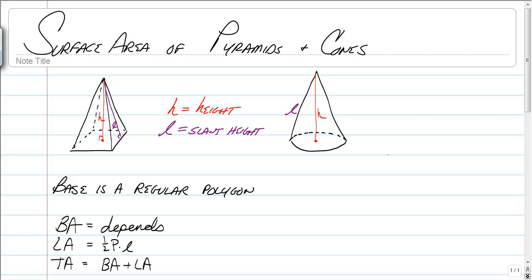This video is going to cover surface area of pyramids and cones. Now it has some similarities with prisms and cylinders, but pyramids and cones only have one base, and they have two different heights.